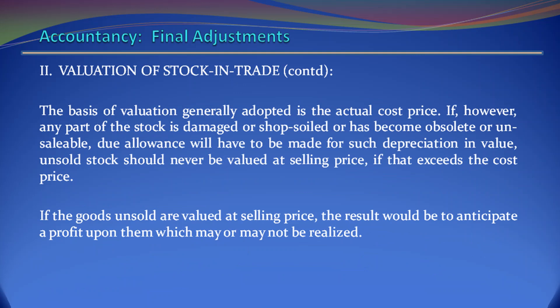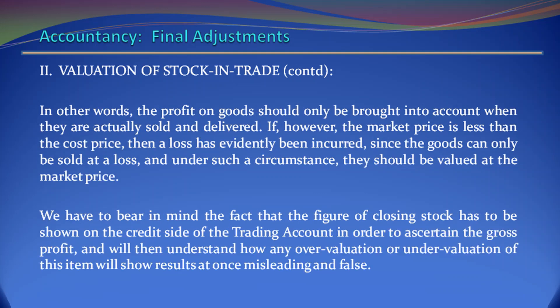Even the extensions and calculations made by one set of clerks should be checked by some other independent assistants. The basis of valuation generally adopted is the actual cost price. If, however, any part of the stock is damaged or shop-soiled or has become obsolete or unsaleable, due allowance will have to be made for such depreciation in value. Unsold stock should never be valued at selling price if that exceeds the cost price. If the goods unsold are valued at selling price, the result would be to anticipate a profit upon them which may or may not be realized. The profit on goods should only be brought into account when they are actually sold and delivered. If, however, the market price is less than the cost price, then a loss has evidently been incurred, and under such circumstances they should be valued at the market price.